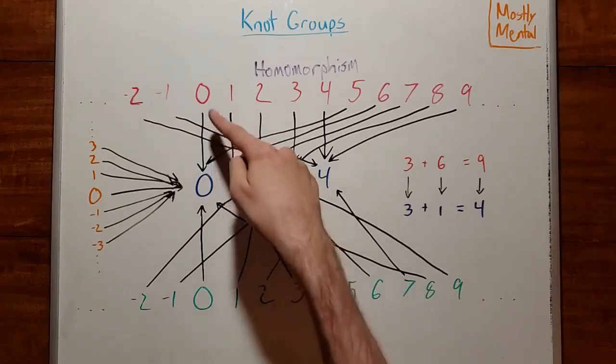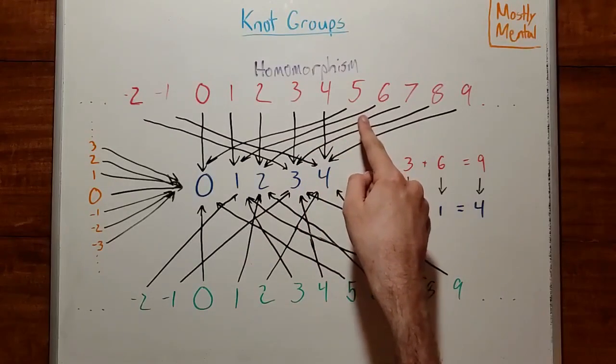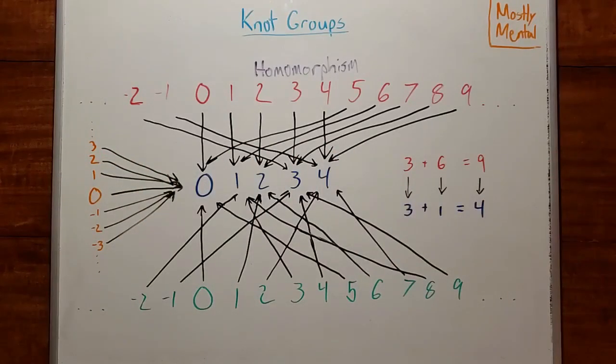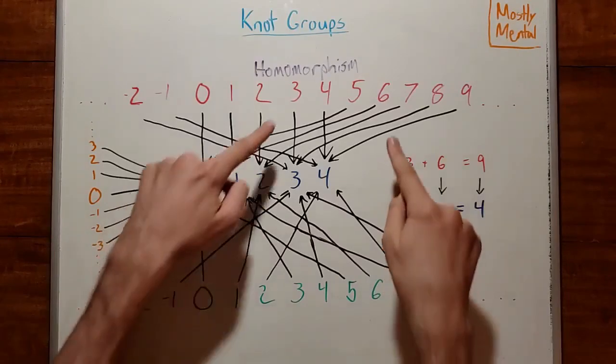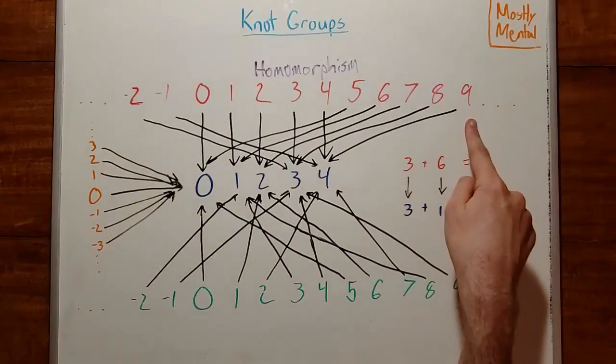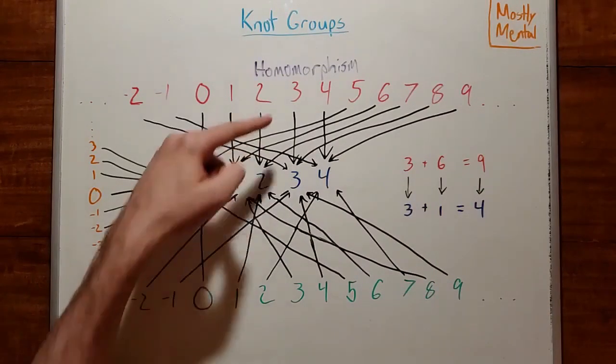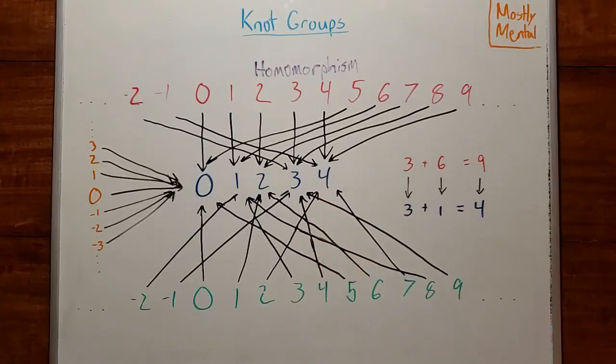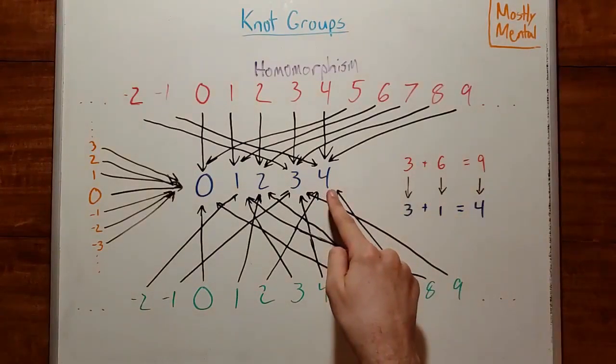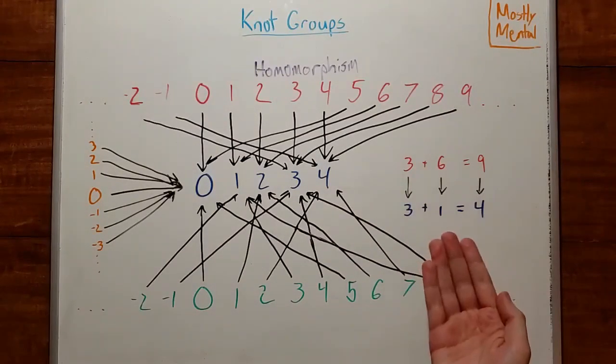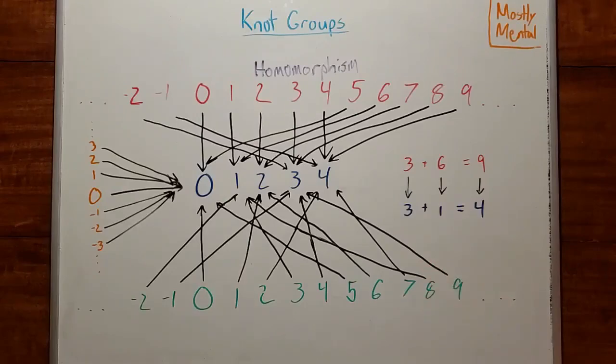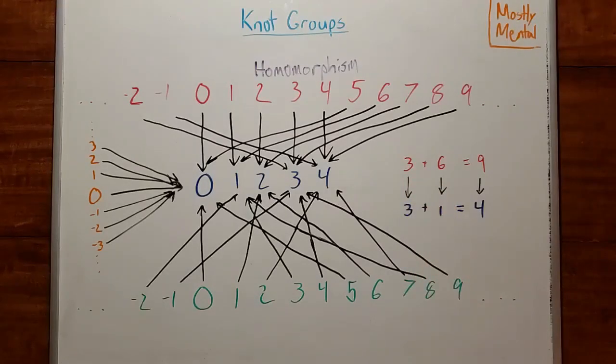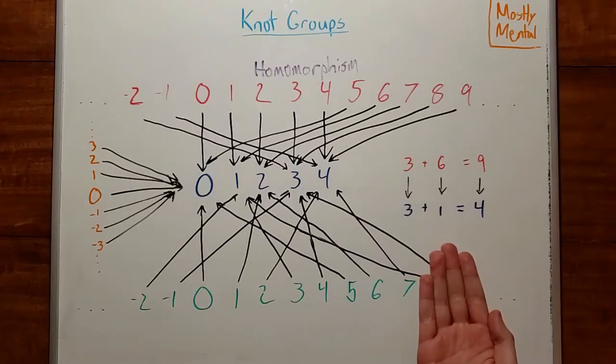Then the most natural mapping sends 0 to 0, 1 to 1, and so on. And then when we get to 5 we start over and send it to 0, and 6 goes to 1, and we repeat this pattern down the line. And say we take any two numbers, maybe 3 and 6, and we can add them together to get 9. And notice that 3 maps onto 3, and 6 maps onto 1, and 3 plus 1 is 4. And 9 maps onto 4. And this same property holds for any two numbers we pick. The value the sum maps onto is the sum of the values the two numbers map onto. This rule here is what it means to be a homomorphism.